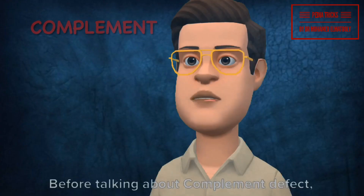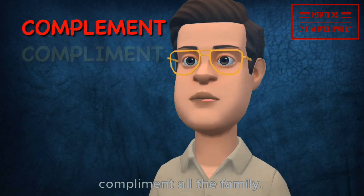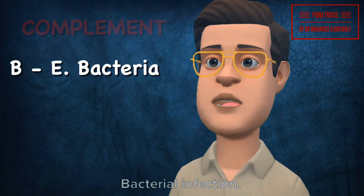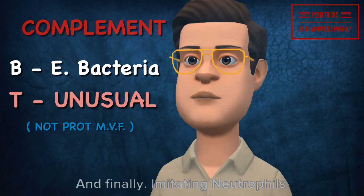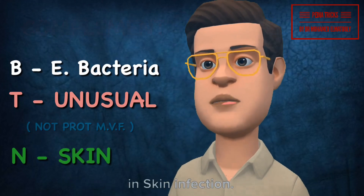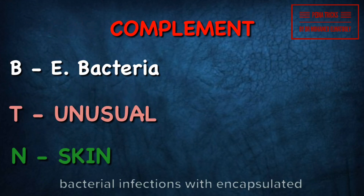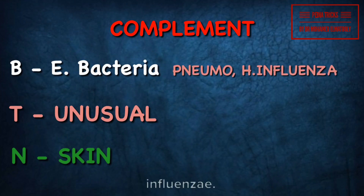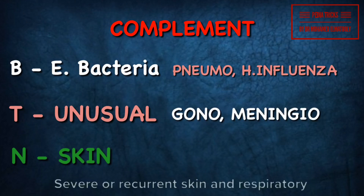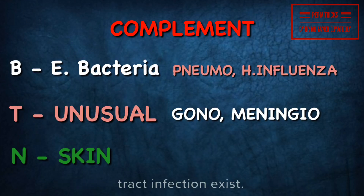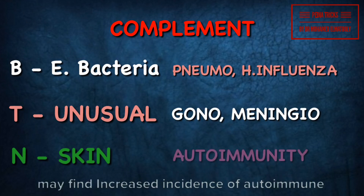Complement defect: remember that complement loves to complement all the family. In case of complement defect, recurrent bacterial infections with encapsulated organisms — pneumococcus and H. influenzae — occur. Also, unusual susceptibility to recurrent gonococcal and meningococcal infections occur. Severe or recurrent skin and respiratory tract infections exist. In case of complement defect, you may find an increased incidence of autoimmune disease.